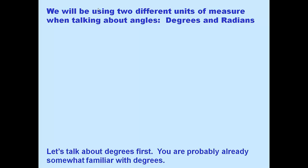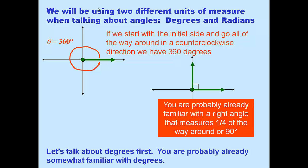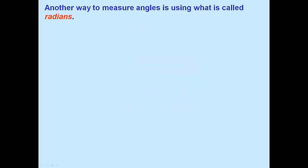We're going to be using two different measures of angles in this class: degrees and radians. You're already familiar with degrees — there are 360 degrees in a circle, divided into 360 equal parts. A 90-degree angle going counterclockwise from initial to terminal side is one-fourth of the way around a circle. If we go one-fourth in a clockwise direction, we would have a negative 90-degree angle.